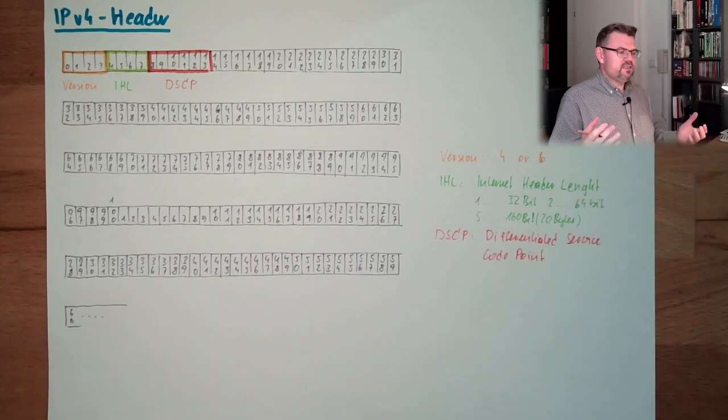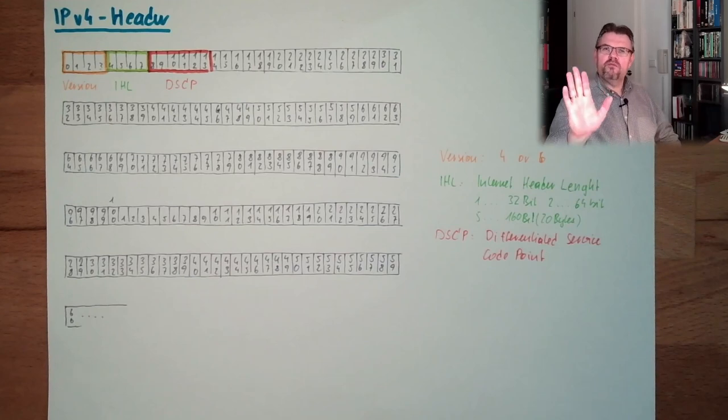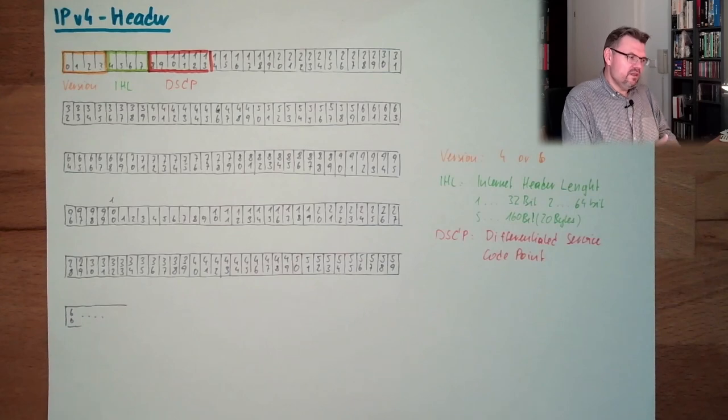This actually gives just a number which puts this packet into a class. This has nothing to do with priority. Higher numbers does not mean it has higher priority. It just says, okay, this is class one, this is class two, this is class three, and so on. You can classify your IP traffic with the help of this.